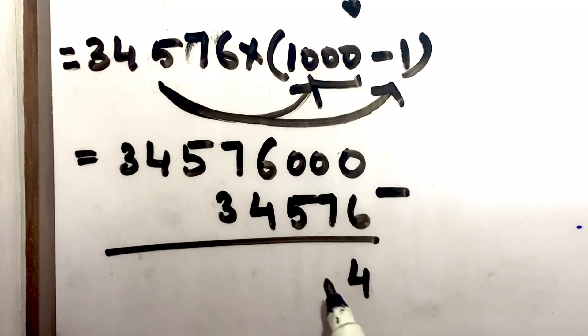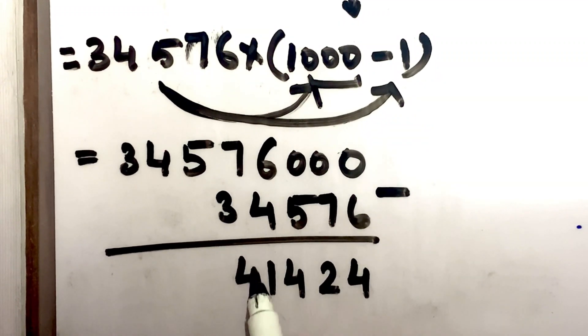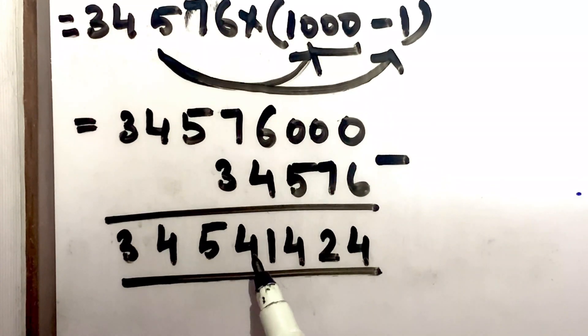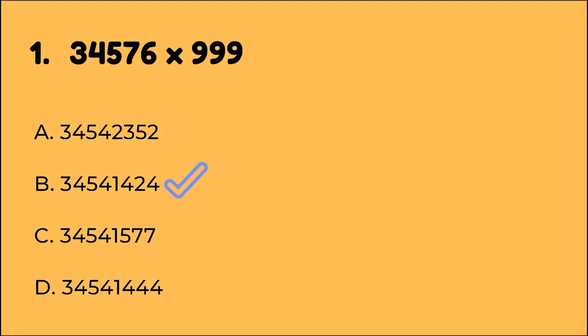If you do normal subtraction, same subtraction. So the answer becomes 34,541,424. Now look at the options. Option B: 34,541,424 is the correct answer.